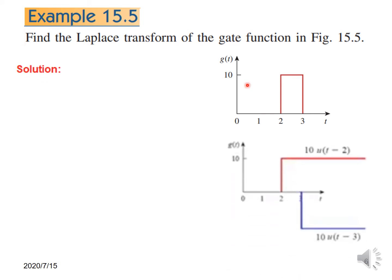Let us see how we can define this function with the help of a graph. This function can be represented by a unit step function. It is starting from time t equal to 2, so we will write it as u(t minus 2) — it is shifted by 2. The magnitude is 10, so we write 10u(t). But this is a unit step function and it will continue till infinity.